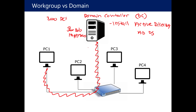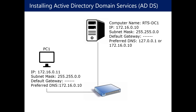So what we need to do is install Active Directory, join computers to the domain, and get user accounts created. Before installing Active Directory, there are a few things you need to do. One, name the computer — when you install the operating system, Windows generates a default name like win-dash random letters and numbers. So rename it before you install Active Directory. In my case, I'm going to name mine RTS-DC1. You also want to set the IP configuration with an appropriate IP address.